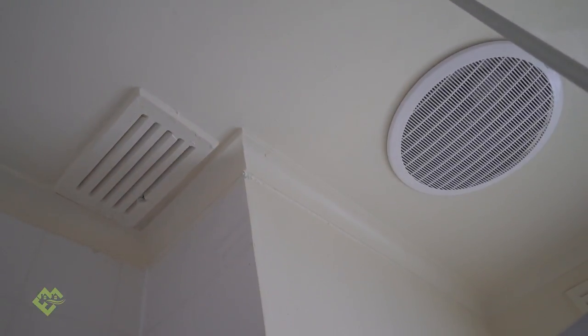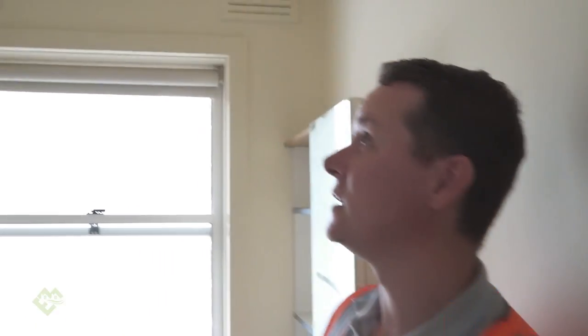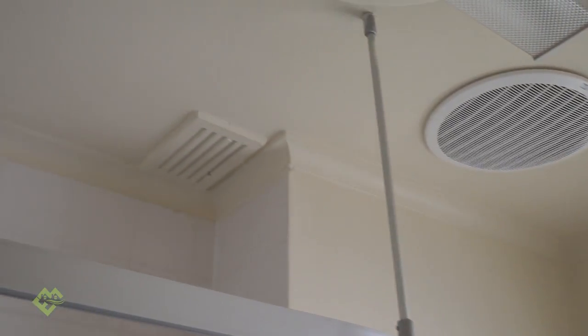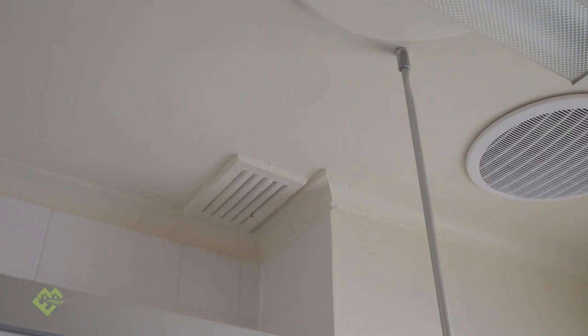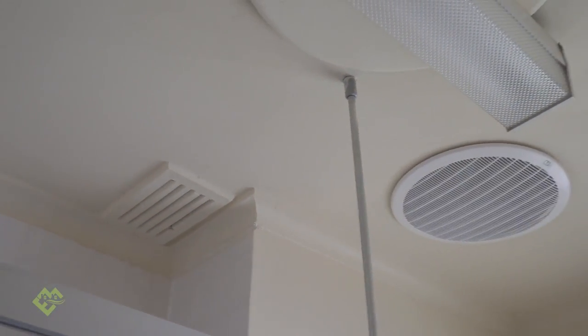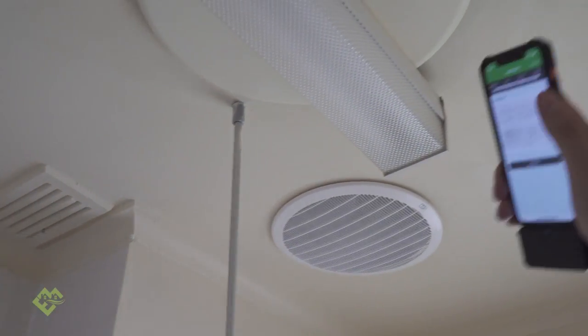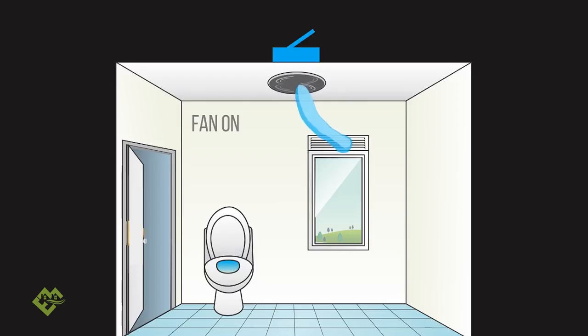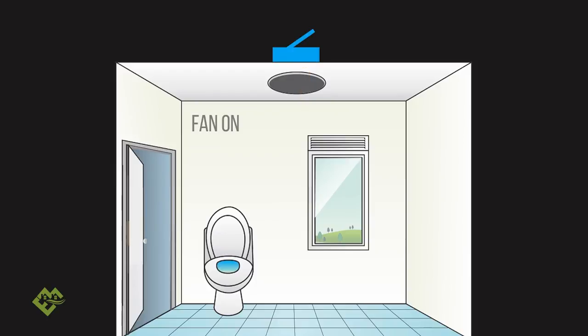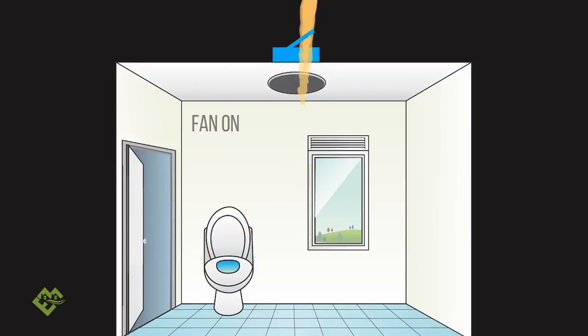Looking at this bathroom, there seems to be quite a lot of ventilation in here - you've got ceiling vents, wall vents, an exhaust fan, and what looks like a ventilated type of light fitting. When you look at where the actual humidity source is coming from, which is directly underneath this shower point...